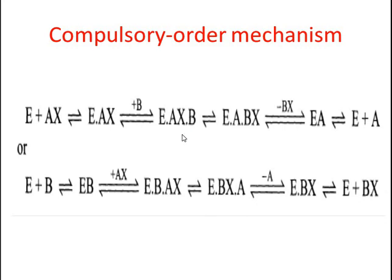For this reaction we proceed with E plus B which gives EB complex. Again the other substrate AX will add in this reaction which gives E-B-AX complex which will convert into E-BX-A complex. Now the product A will leave from this reaction which gives the complex E-BX.